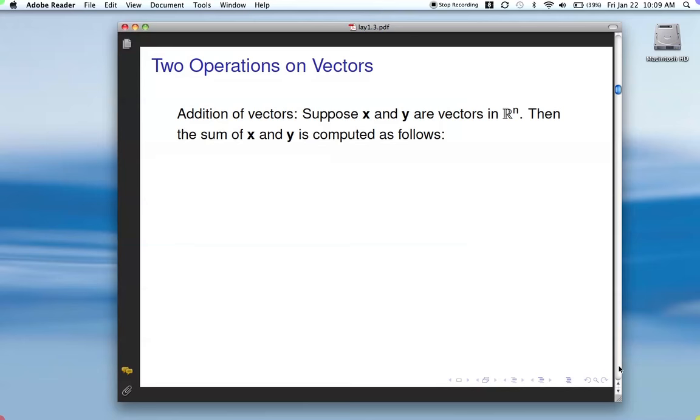There are 2 operations that we need to know how to perform on vectors. The first of these is addition of vectors. So if we have 2 vectors, x and y, in R^n, then we can compute their sum as indicated here. Here's x, here's y. Both have n components. To compute their sum, you just add components that are in the same position. So first position, x_1 plus y_1 gives you the first position in the sum. Then x_2 plus y_2, and so forth to x_n plus y_n.